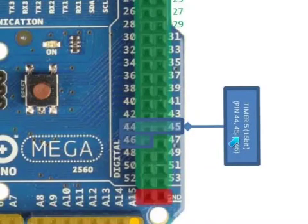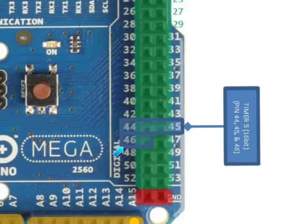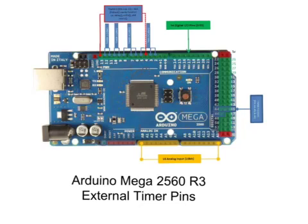The last timer is timer 5, which utilizes pin 44, pin 45, and pin 46. Like timer 3 and timer 4, timer 5 is free from the Arduino library software. For timing-sensitive applications, it is best advised to use either timer 3, timer 4, or timer 5. Timer 1 and timer 2 may be used when they are not attached to their default functions, such as the tone library and the servo library respectively.